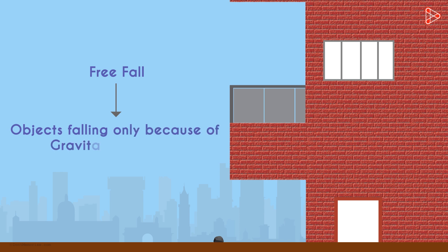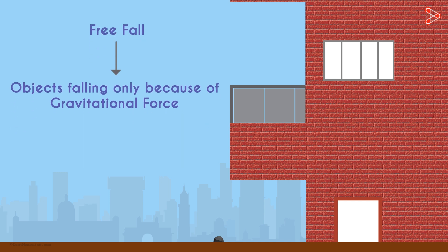Whenever objects fall towards the earth under this force alone, we can say that the objects are in free fall. This stone accelerates towards the earth, and this acceleration due to the gravitational force of the earth is denoted by lowercase g.